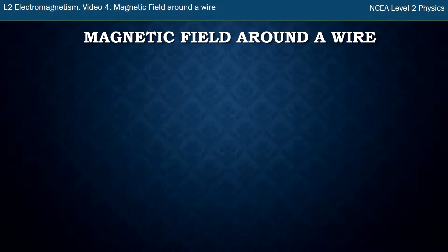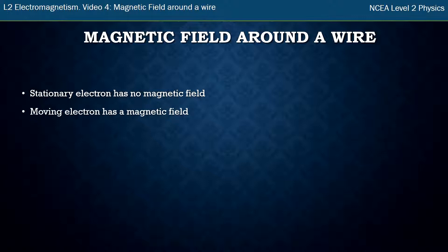Hi, this is Mr. McGovern. This is the fourth video in the electromagnetism series. We're going to look at the magnetic field around a wire. Just as a recap, a stationary electron has no magnetic field but it does have an electric field. However, a moving electron has a magnetic field. Electricity is moving electrons, so therefore there are going to be magnetic fields around electrical wires, especially when they have current in them.